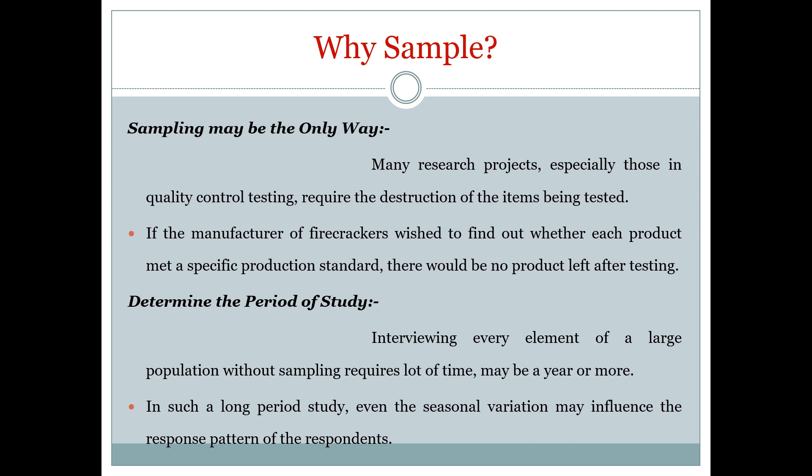Sampling may be the only way. For example, with firecrackers, if I want to test whether they are working, I would not light up all of them. Interviewing every element of a large population without sampling requires a lot of time — maybe a year or more. In such a long period, even seasonal variation may influence the response pattern of respondents. For example, if we study upper respiratory tract infections, they would be more prevalent in spring due to pollination and less so in summer.